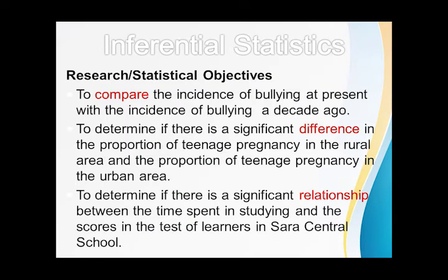Some examples of problems or research objectives are: to compare the incidence of bullying at present with the incidence of bullying a decade ago; to determine if there is significant difference in the proportion of teenage pregnancy in rural areas and the proportion of teenage pregnancy in urban areas; to determine if there is significant relationship between the time spent in studying and the scores in the test of learners in Sara Central School.